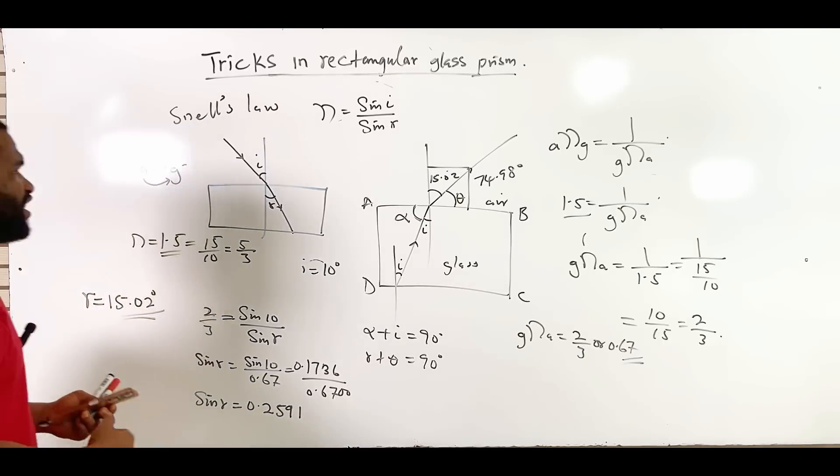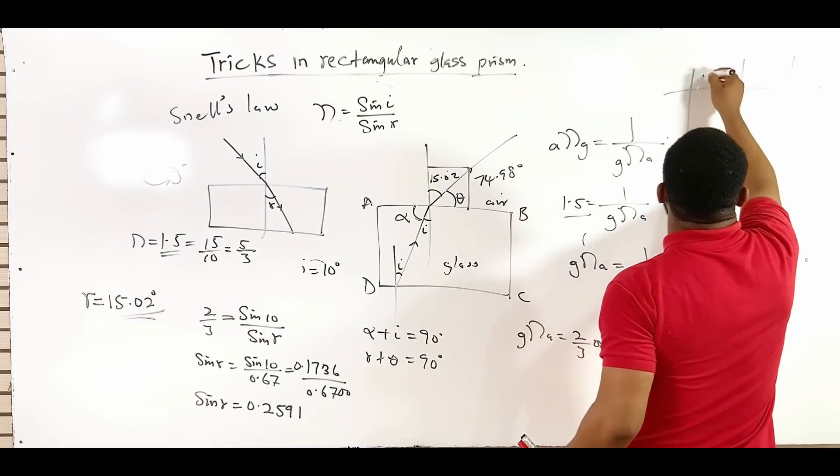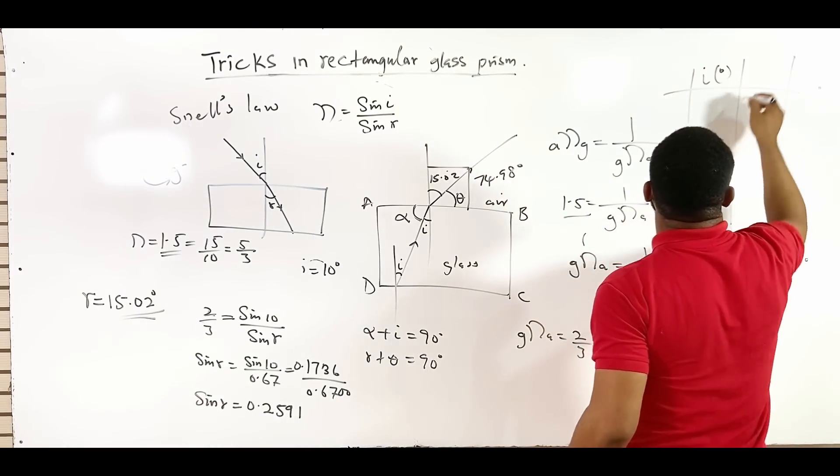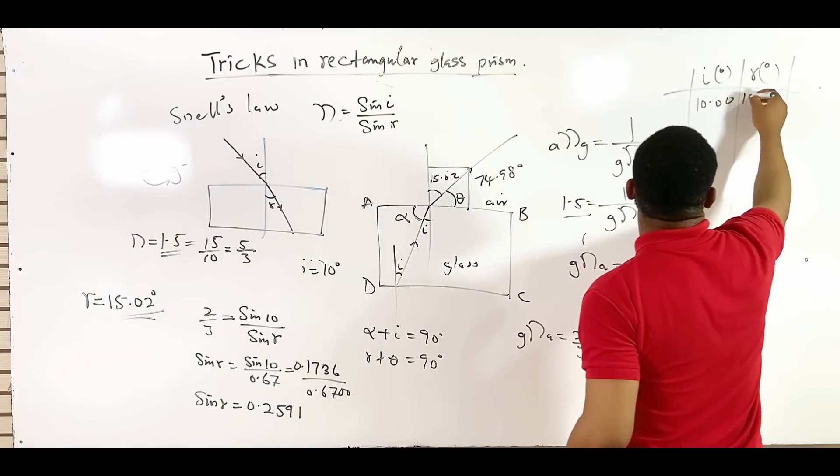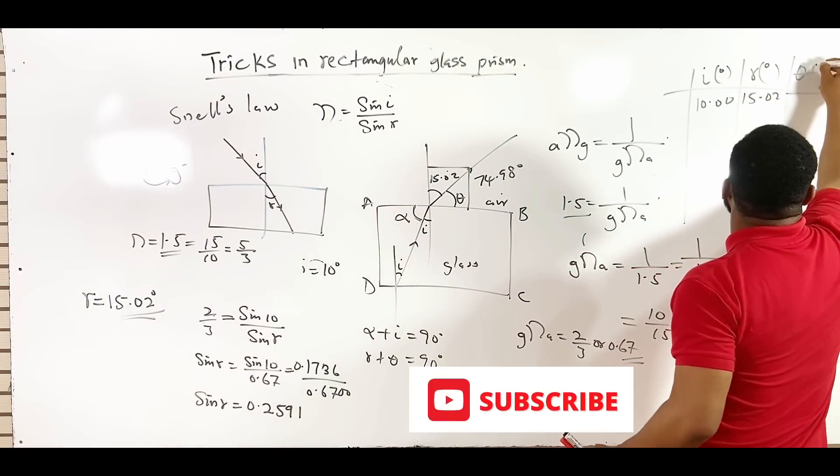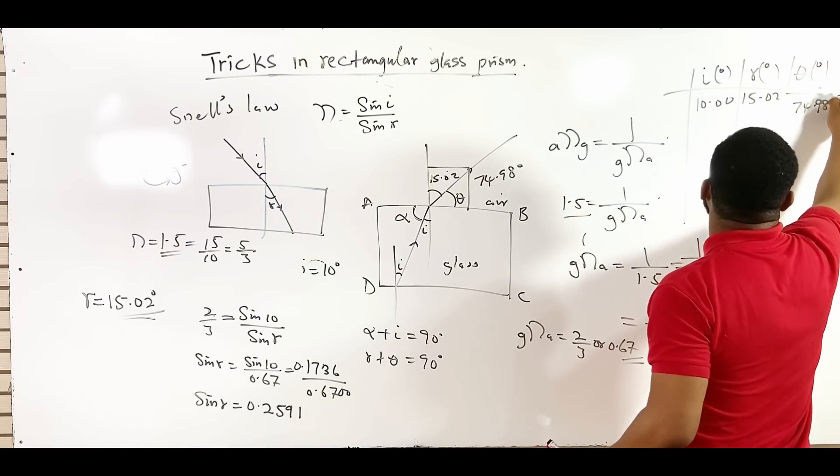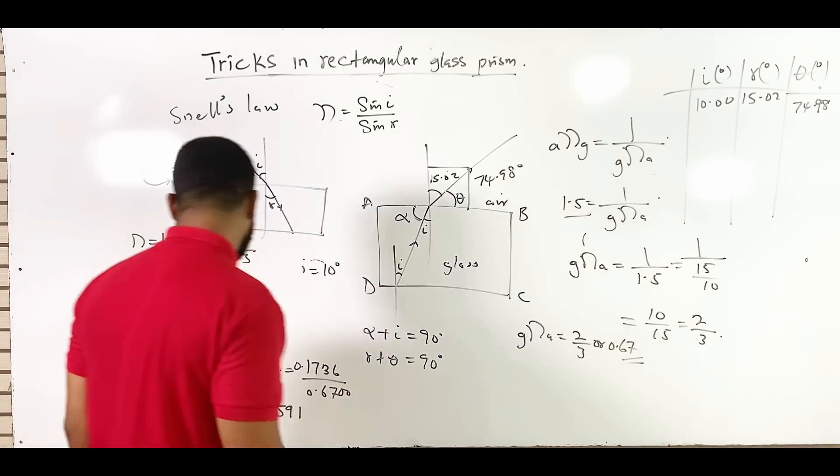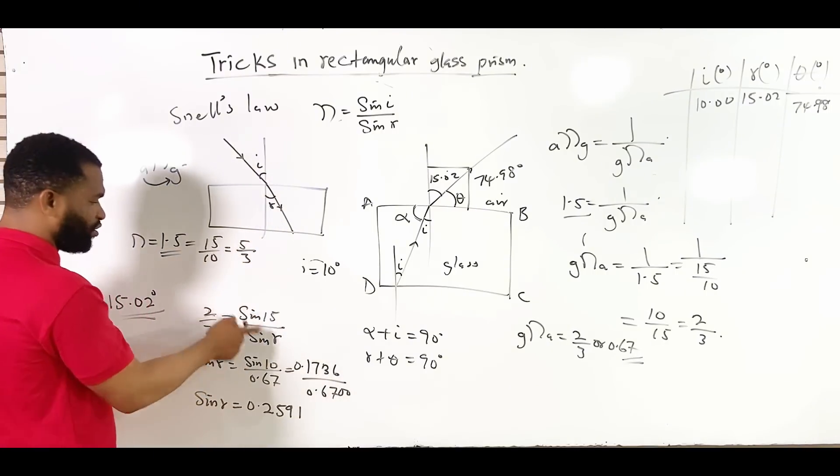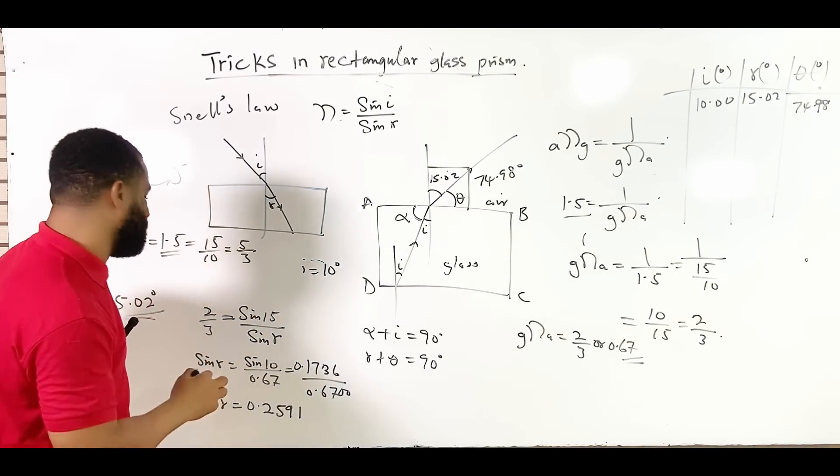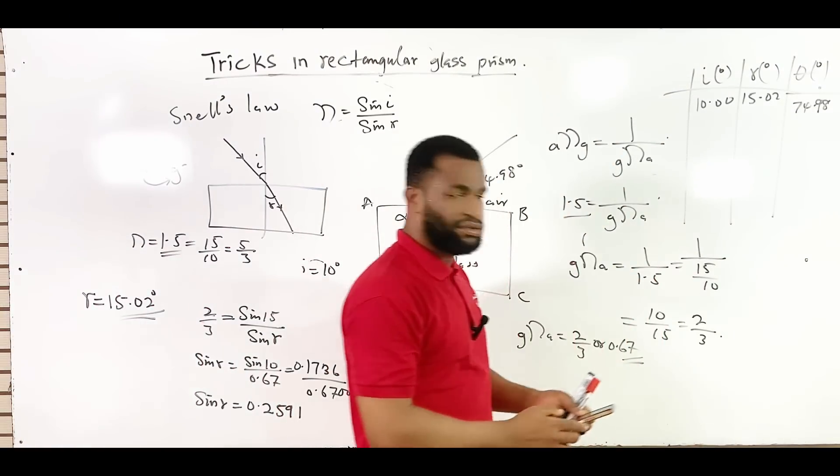What do you do? You can now form your table of values. You say this is i in degrees and this is r in degrees. This is 10.00 and r is going to be 15.02. And theta in degrees is going to be 74.98. So with this, you go back the same again, remove this 10, maybe put 15, complete the experiment. I mean, carry out the calculation again and then fill up your table.